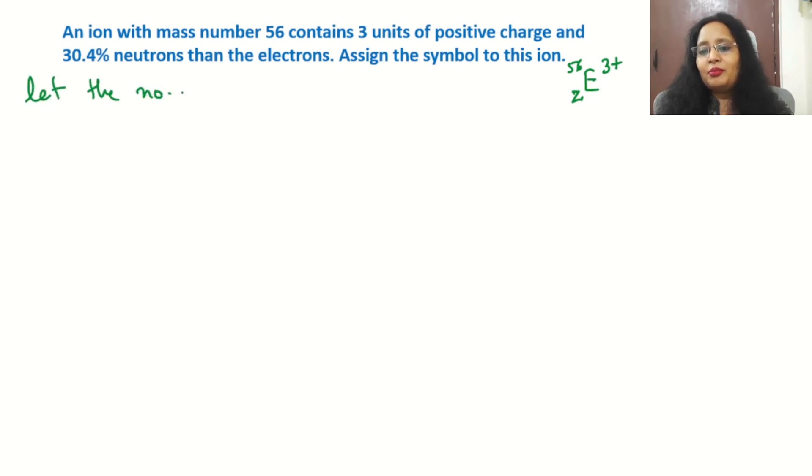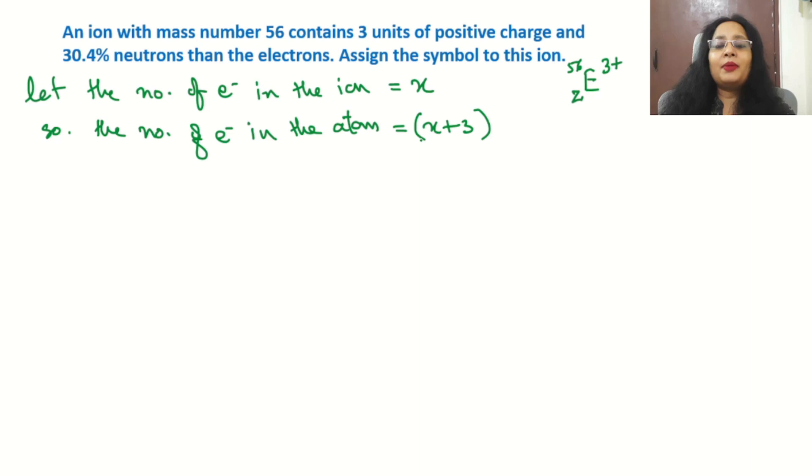Let the number of electrons in the ion is x. If the number of electrons in the ion is x, then the number of electrons in the atom is x plus 3. Because 3 is less than the ion in the normal atom, this will be the number of electrons in the atom. This is very simple concept - 3 plus means 3 electrons are out of the ion.